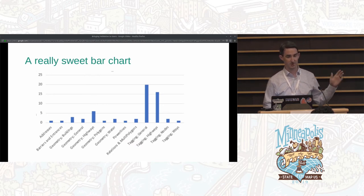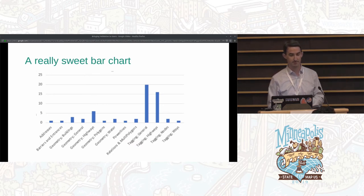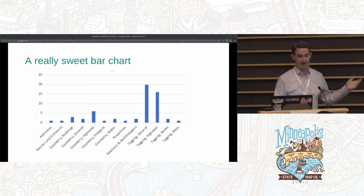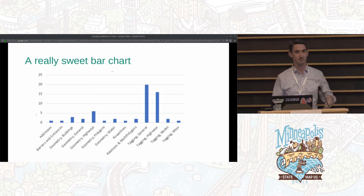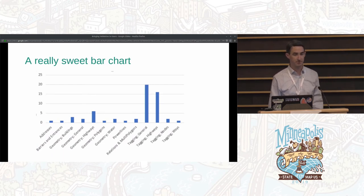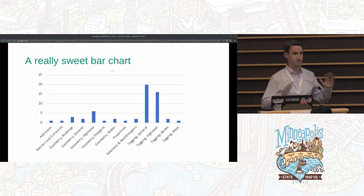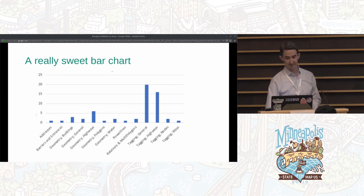Most of what we've converted to MapCSS is highway and tagging related, but there's plenty of space for improvement for other mappers — people who are great at mapping railways or whatever. Go for it and please share.